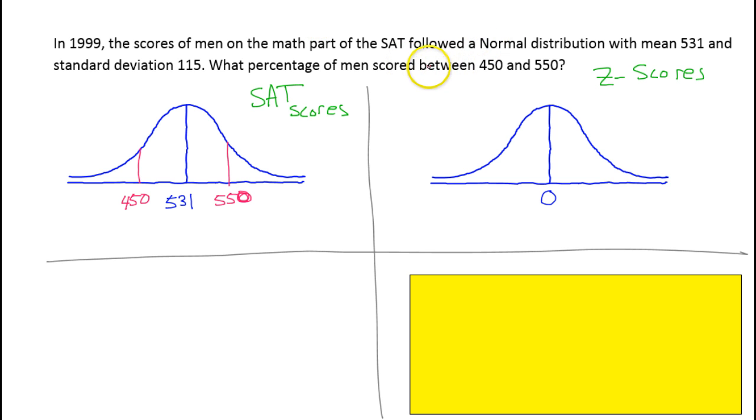If we want the percentage of men who scored between these two numbers, on the graph, that means we're looking for the percentage of data that falls in between these two lines. So we're looking for the percentage of data that falls into this yellow area.